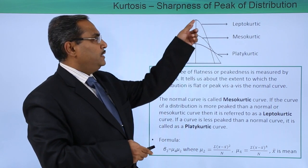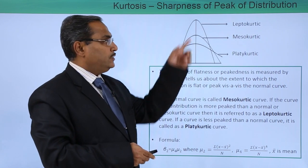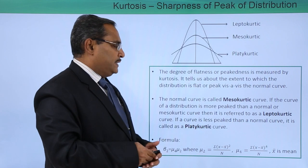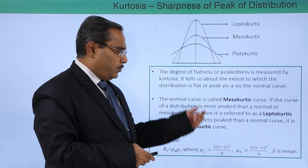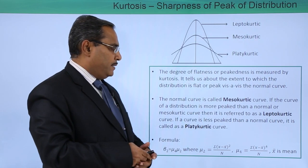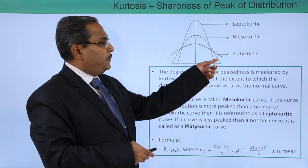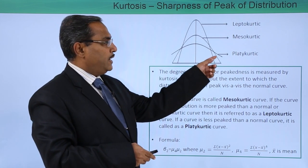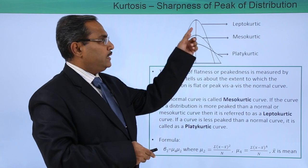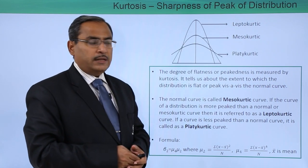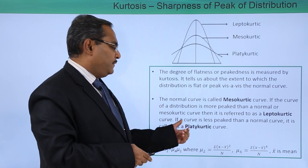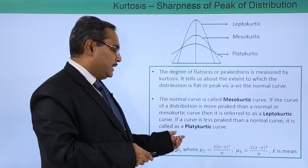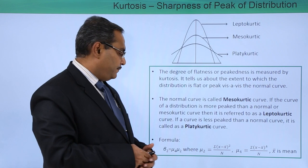If the sharpness is very high, then it will be known as leptokurtic. If a curve is less peaked than a normal curve, then it is called a platykurtic curve. So there is the platykurtic at the bottom, the mesokurtic as the normal curve, and the leptokurtic is the upper one with the sharpest peak.